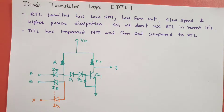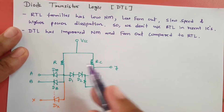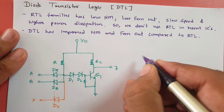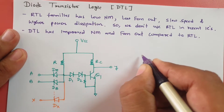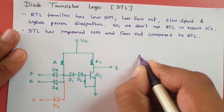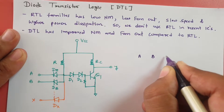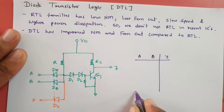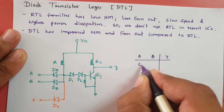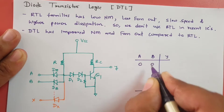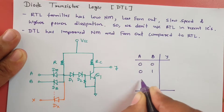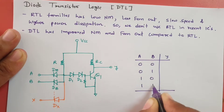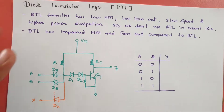Now let us understand the working of this circuit using a truth table. The truth table has inputs A and B and output Y. The input combinations are 00, 01, 10, and 11, and we will see how the output appears in each case.